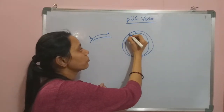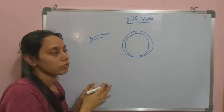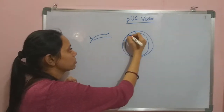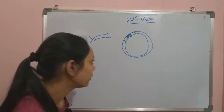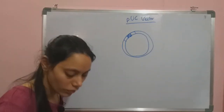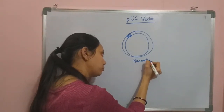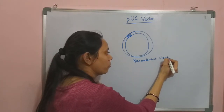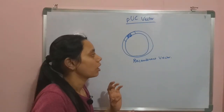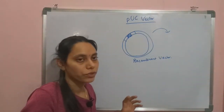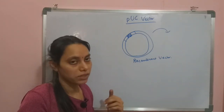We cut the PUC vector to form ends similar to those of the target gene, so the target gene inserts into the vector. The resulting construct is now called a recombinant vector. This recombinant vector is then used for transformation of bacterial cells in culture media.